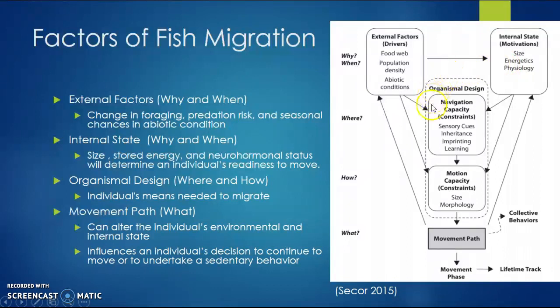There is also organismal design, which reflects an individual's need to migrate. This has a navigation component that focuses on sensory cues, inheritance, imprinting, and learning. The other section of organismal design is movement capacity, which focuses on structure and morphology. Movement paths can alter the individual's environmental and internal state, and can influence an individual's decision to continue moving or to undertake a sedentary lifestyle.